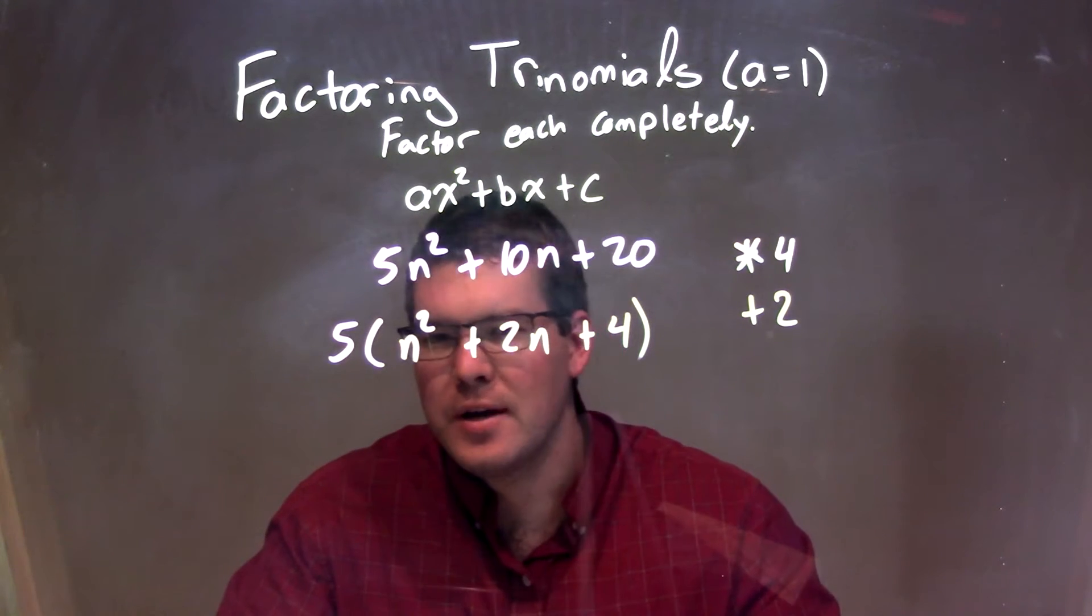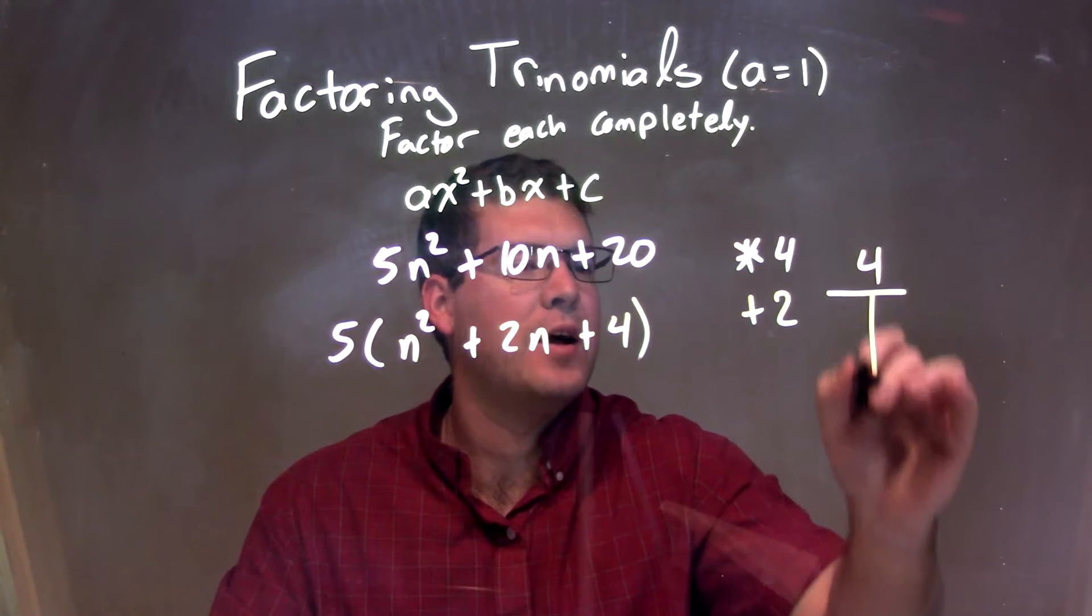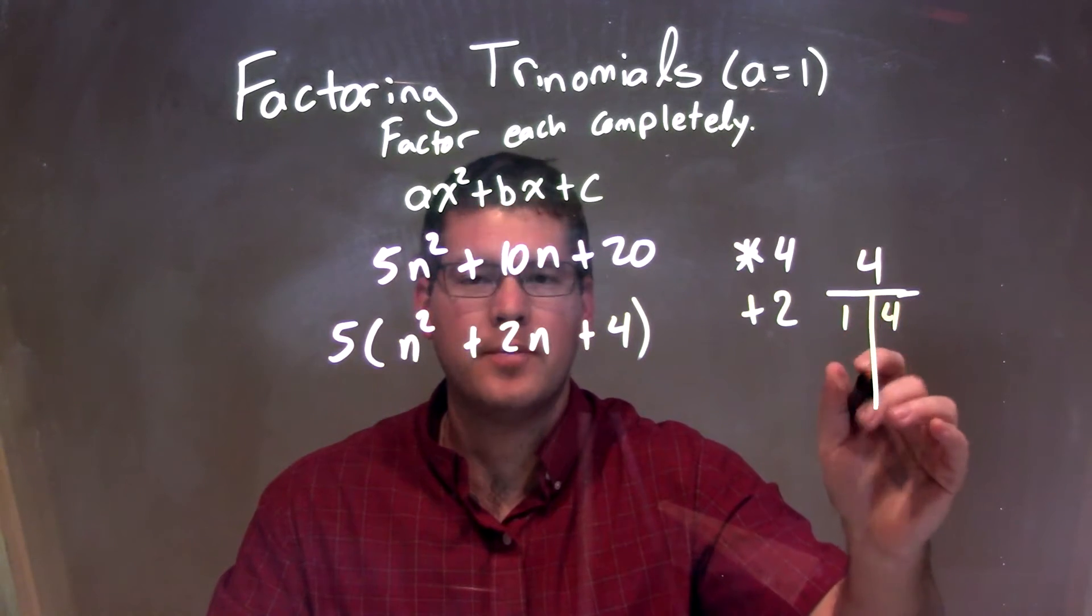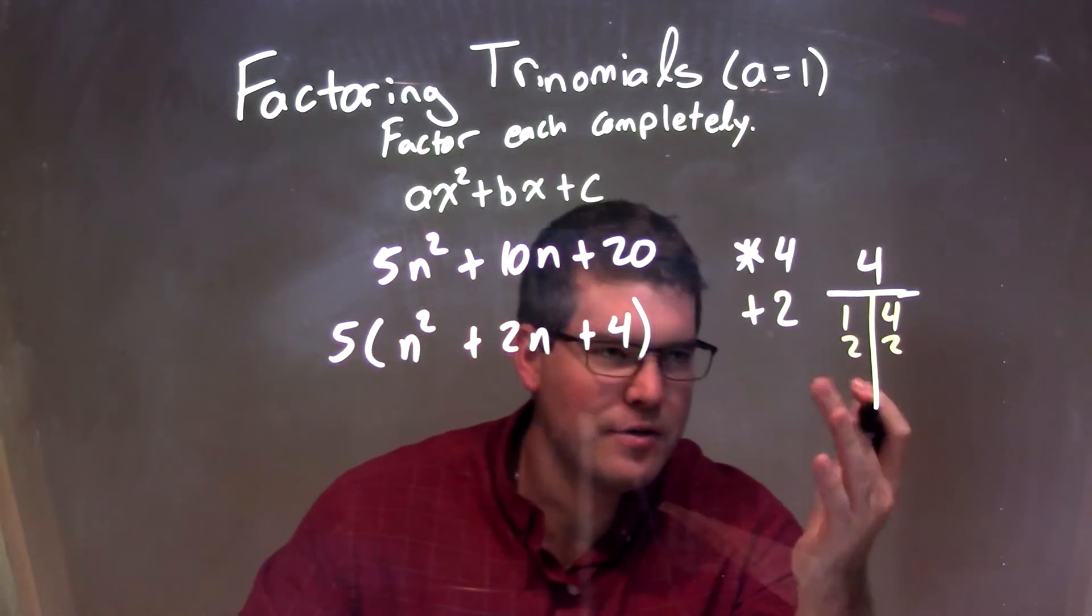Hmm, this was a little tricky. Let's make a table. Let's make a table of all the numbers that multiply to equal 4. Well, 1 and 4 equal 4. 2 and 2 equal 4. Okay. Then I can flip those, and you're going to have 4 and 1.